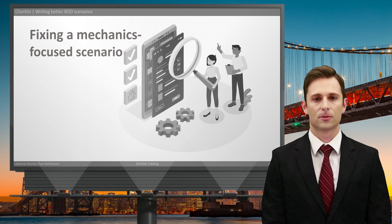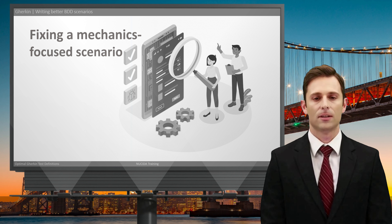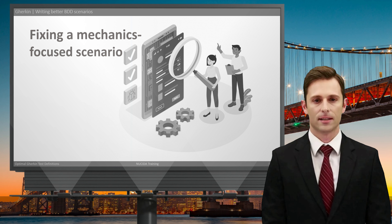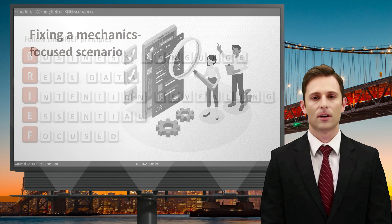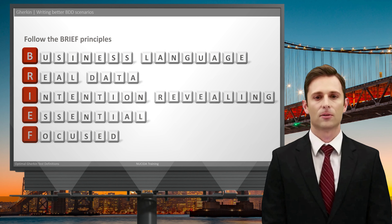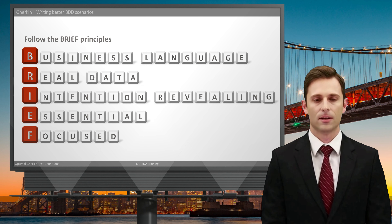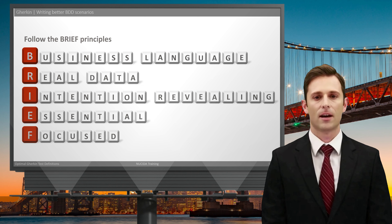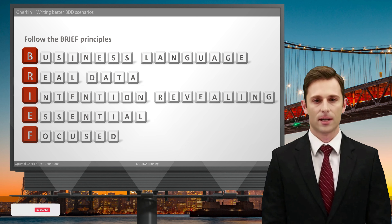When I do the fix I will use the principles I have already highlighted — we call them BRIEF principles. We call them BRIEF because the initial letters of the first five principles make up the word BRIEF, which is also an important principle as the sixth one. These five principles are called: Business language, Real data, Intention revealing, Essential, and Focused. Now I'll use these principles to fix my ugly scenario and you will see how to use them in practice.